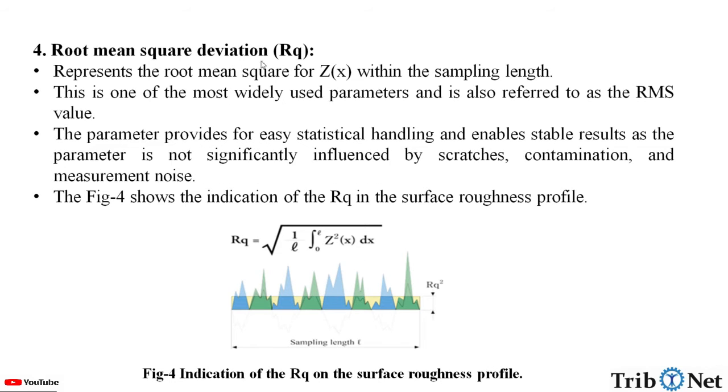Third factor, root mean square deviation, which is Rq. It represents the root mean square of Z within the sampling length. This is one of the most widely used parameters and is also referred to as the RMS value. The parameter provides for easy statistical handling and enables stable results as the parameter is not significantly influenced by contamination, scratches and measurement noise.